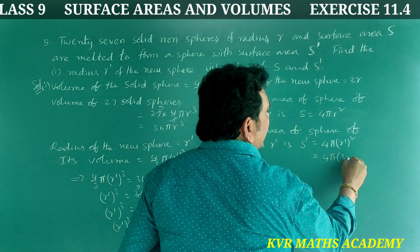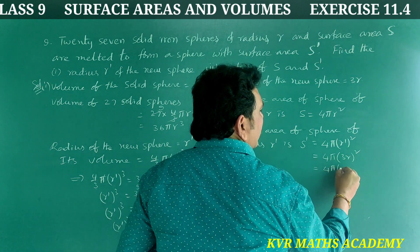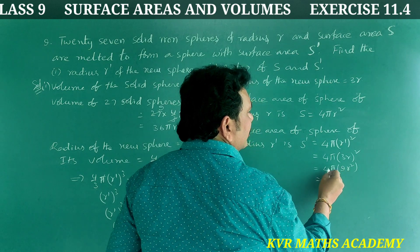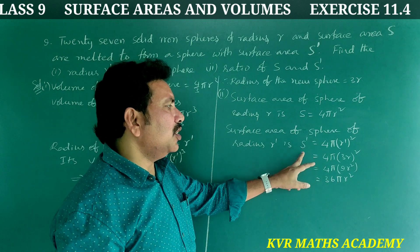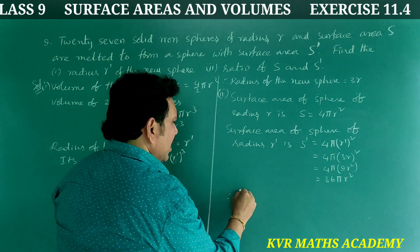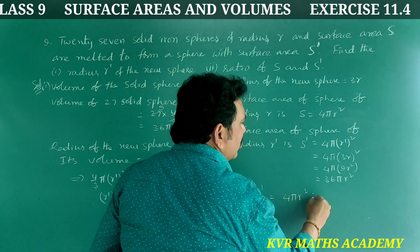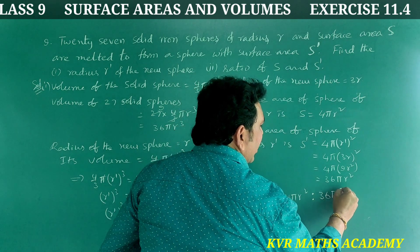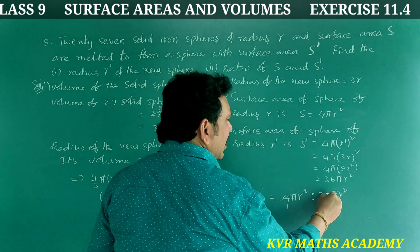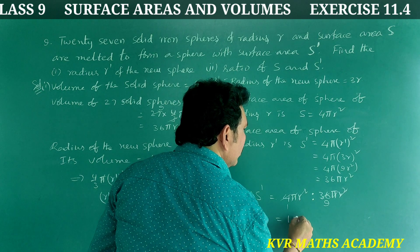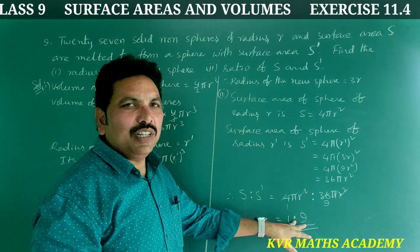Substituting r dash equals 3r: s dash equals 4 pi into (3r) squared equals 4 pi into 9 r square equals 36 pi r square. Cancelling pi, r square, and 4 from s and s dash: the ratio of s to s dash is 1 is to 9.